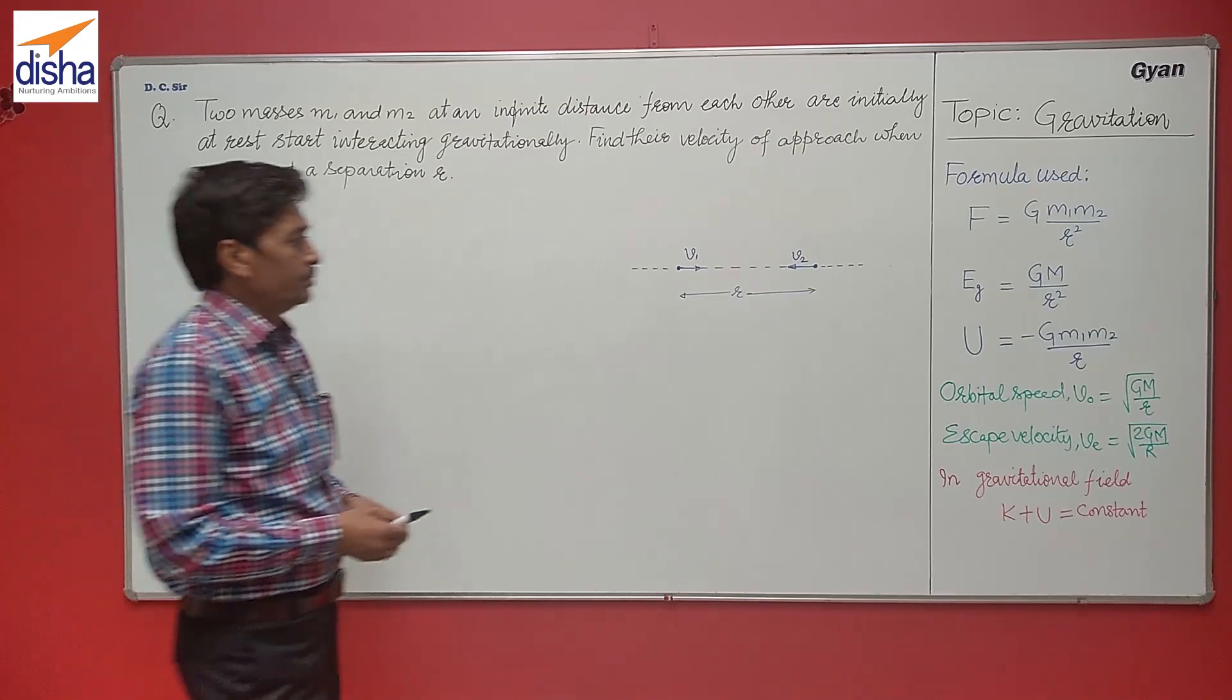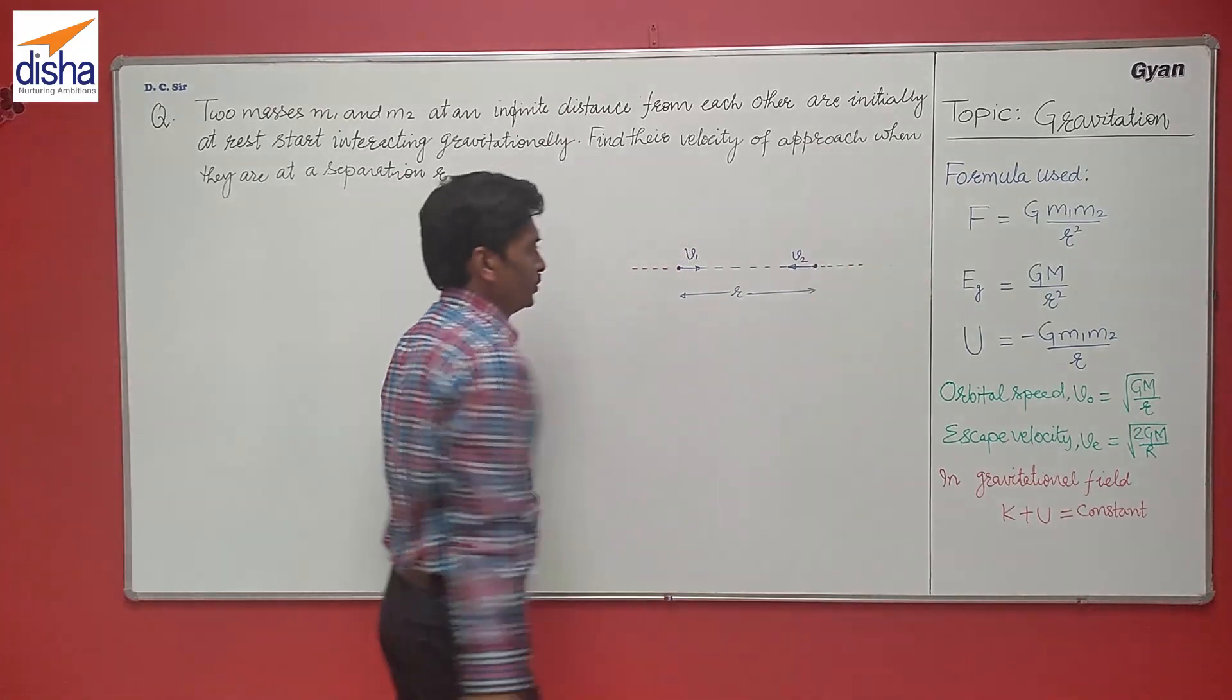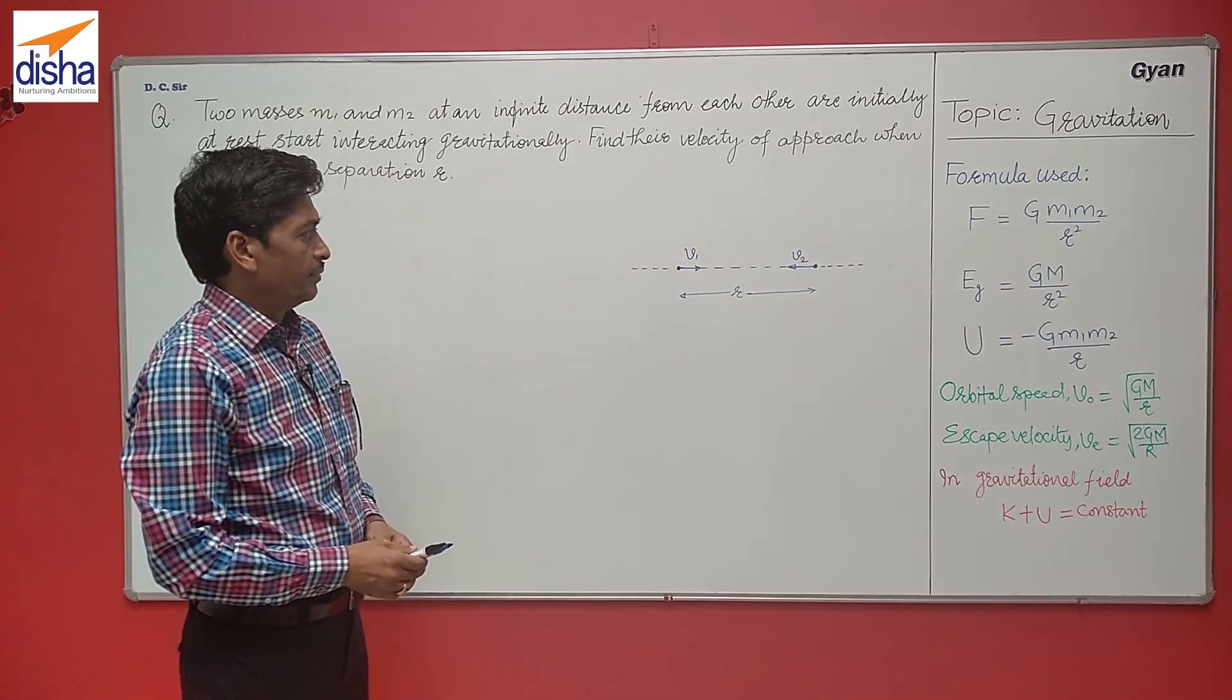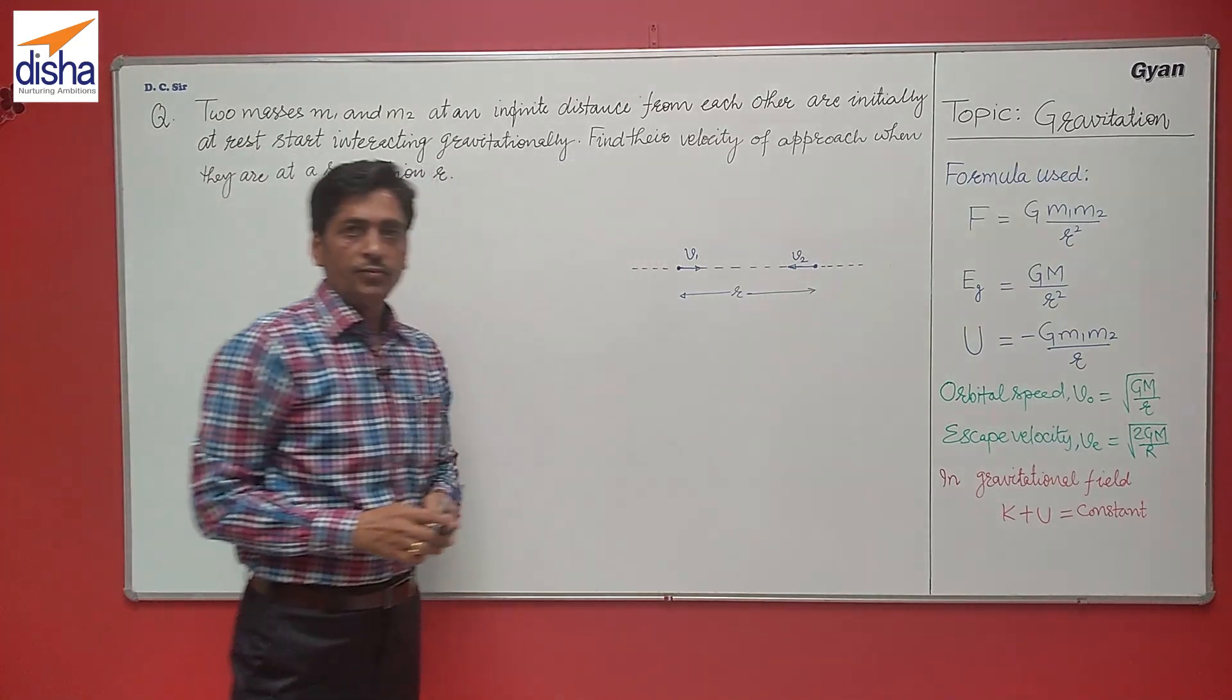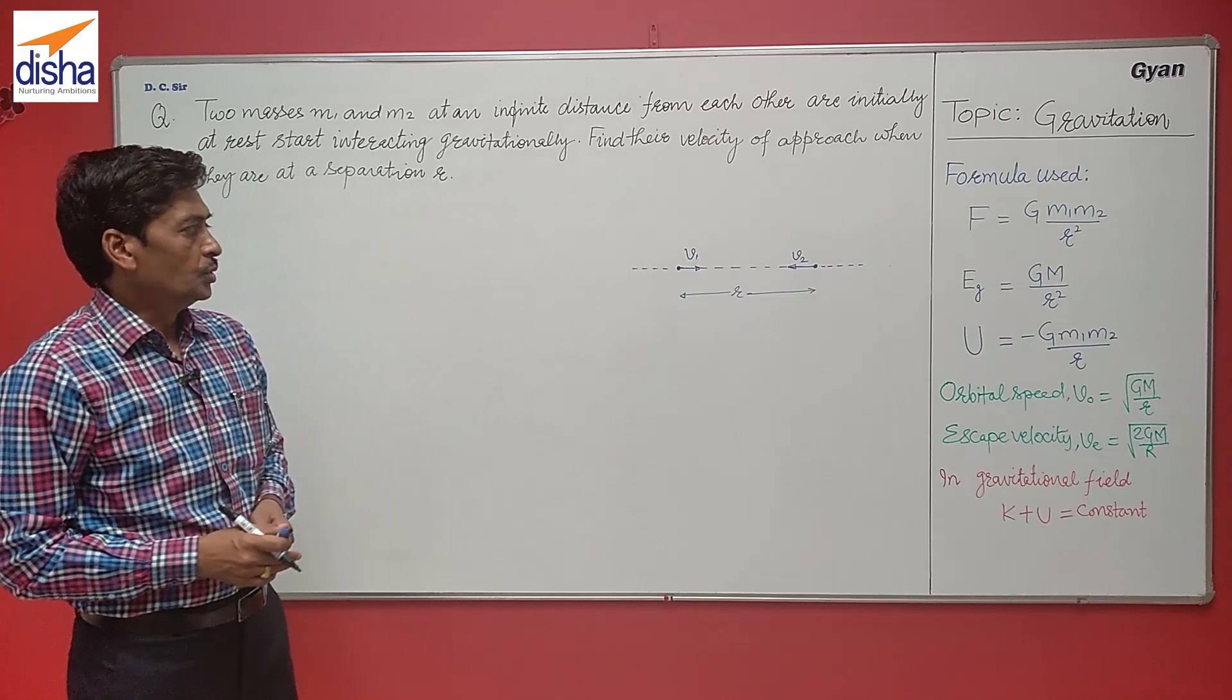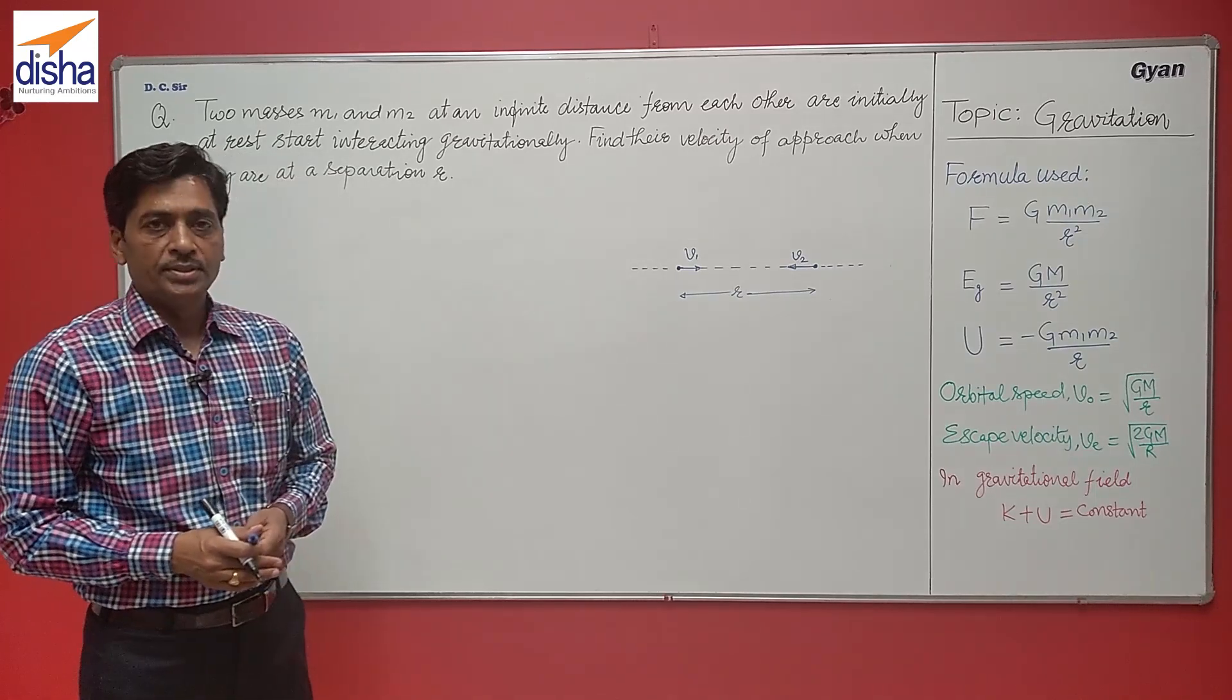Now you have the two particles initially at a separation infinity. Because of gravitational attraction, they start moving towards each other. As no external force is on the system, the momentum of the system remains constant.